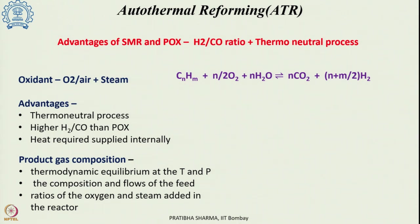The advantage of partial oxidation - that it was an exothermic process - is carried in autothermal reforming. At the same time, the higher H2/CO ratio, which is an advantage of SMR, is also carried in autothermal reforming. The oxidant used is oxygen or air along with steam. The hydrocarbon undergoes partial oxidation as well as steam reforming, converting it into carbon monoxide and hydrogen.